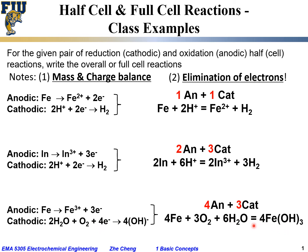Let's verify the overall full cell reaction. Four iron on the left, four iron on the right — balanced. Twelve oxygen on each side (6×2 and 4×3×1) — balanced. Twelve hydrogen on each side — balanced. Net charge on the left is zero, net charge on the right is zero — charge is balanced. By combining the anodic and cathodic reactions with the proper multiplication factors to eliminate electrons, we obtain a balanced full cell reaction.